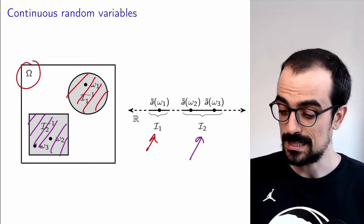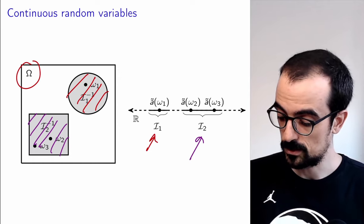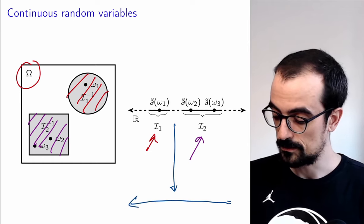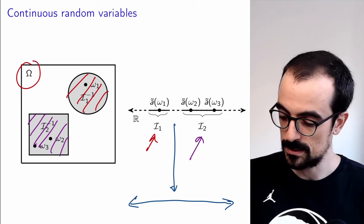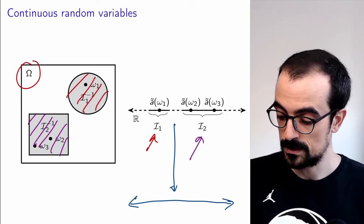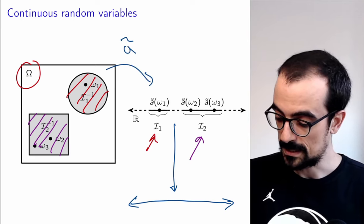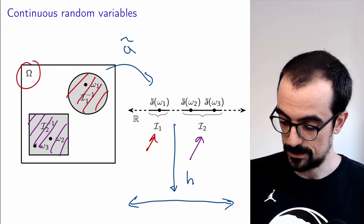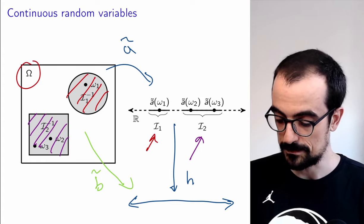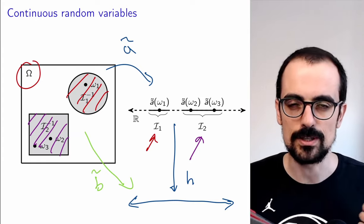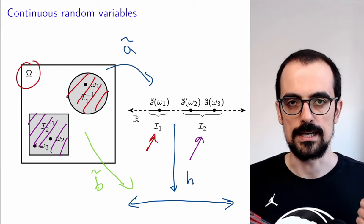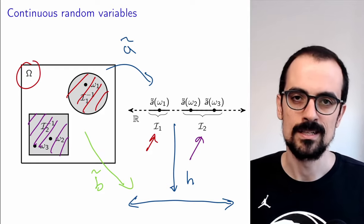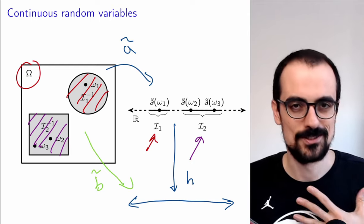It turns out that if you have a function from the real line to the real line, you can build that function such that the composition — which is the random variable combined with function h — creates a new random variable B that maps the sample space to the real line in such a way that B is not measurable, so you cannot assign probabilities to the pre-images of the intervals. I don't know how to do that, to be honest, but it can be done.